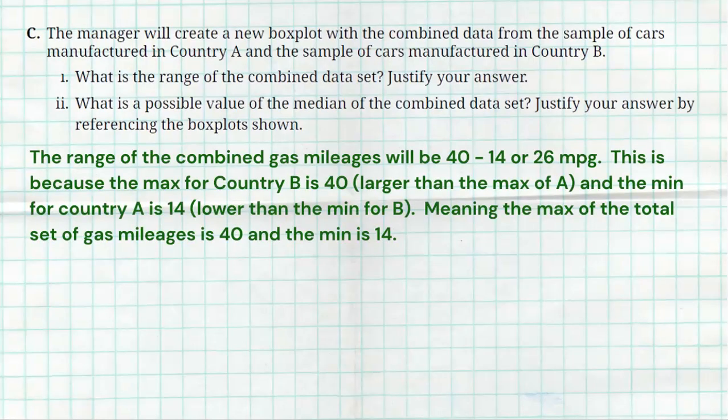Now, the range is going to be 40 minus 14, or 26. Now, here's how I came up with that. The max for Country B is 40, and that's larger than the max of Country A, so if you put all the data together, the largest value is going to be 40 from Country B, and then the min from Country A is 14, lower than any of the min from Country B, so that means the lowest value, if you put them all together, is going to be that min from Country A. So now, if we take the max of 40 and the min of 14, 40 minus 14 is how I came up with 26, so pretty easy question.